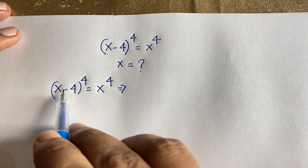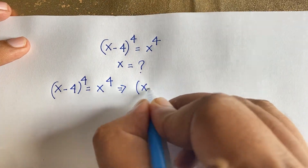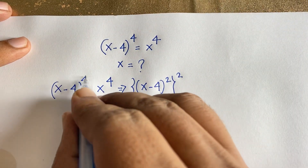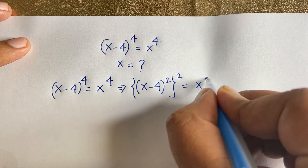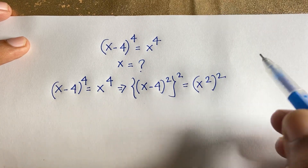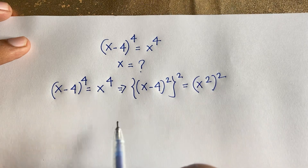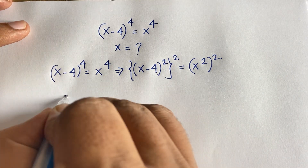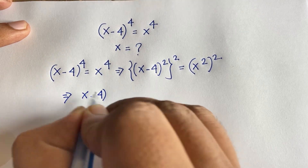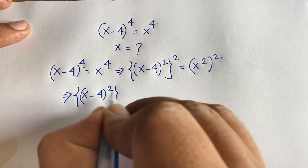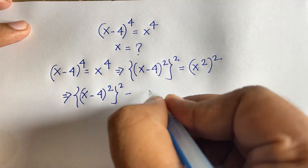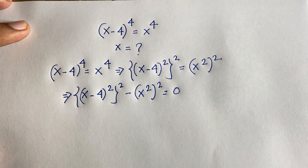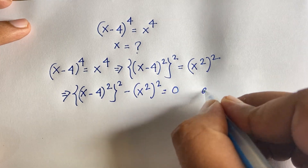I can rewrite this expression: (x minus 4) whole to the power 2, and again whole to the power 2, since 2 times 2 equals 4. Similarly, x to the power 4 becomes (x squared) whole to the power 2. So the equation becomes: [(x minus 4) squared] squared minus [x squared] squared is equal to 0.